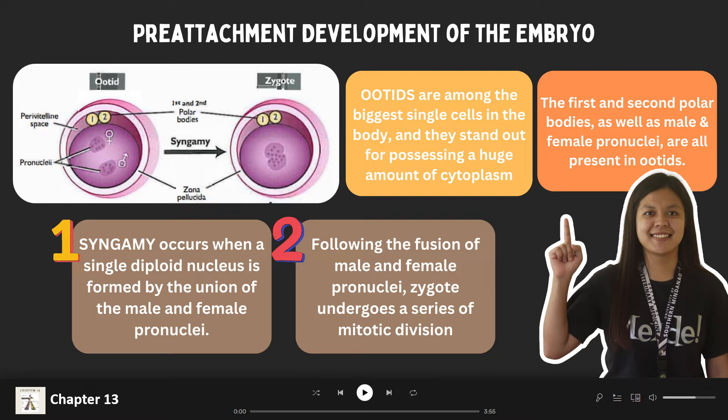As you can see, the first and second polar bodies, as well as the male and female pronuclei, are all present. Syngamy occurs when a single diploid nucleus is formed by the union of male and female pronuclei. Following their fusion, the single-celled embryo, or zygote, undergoes rapid cell cycles with no significant overall growth, producing cells the same size as the original zygote.